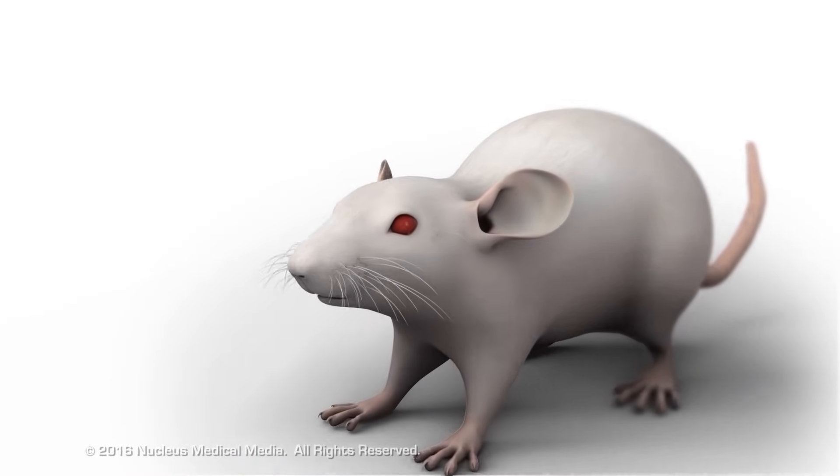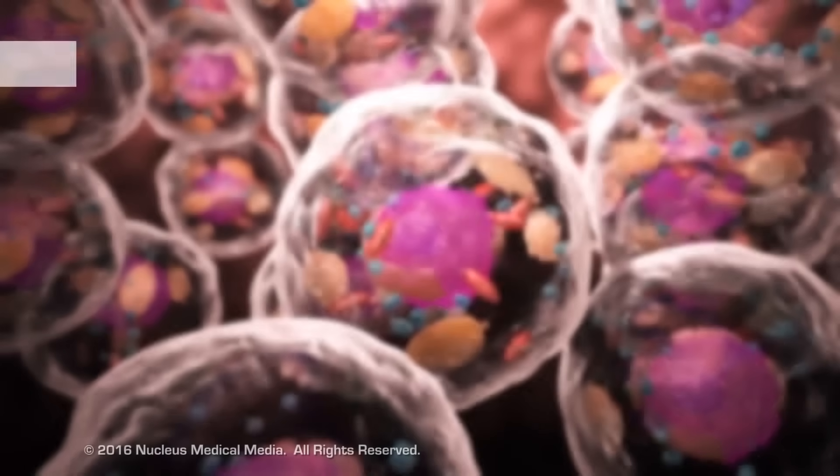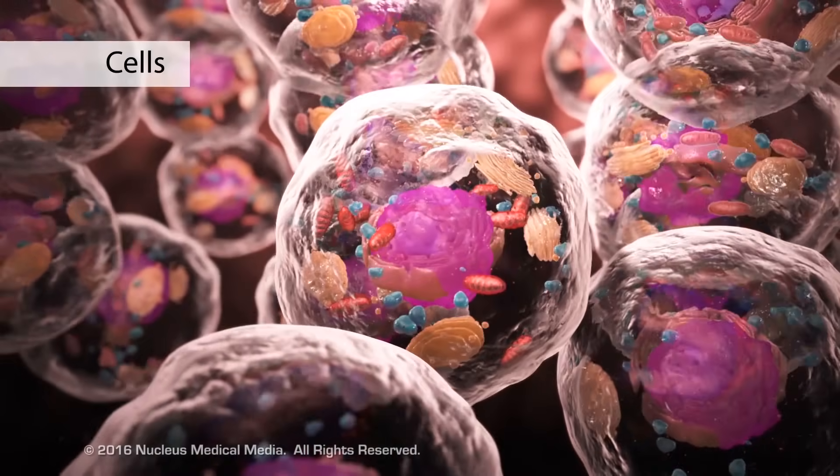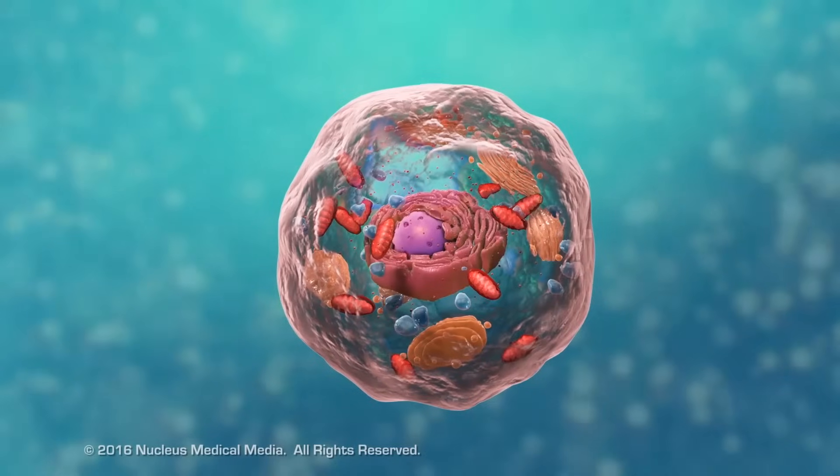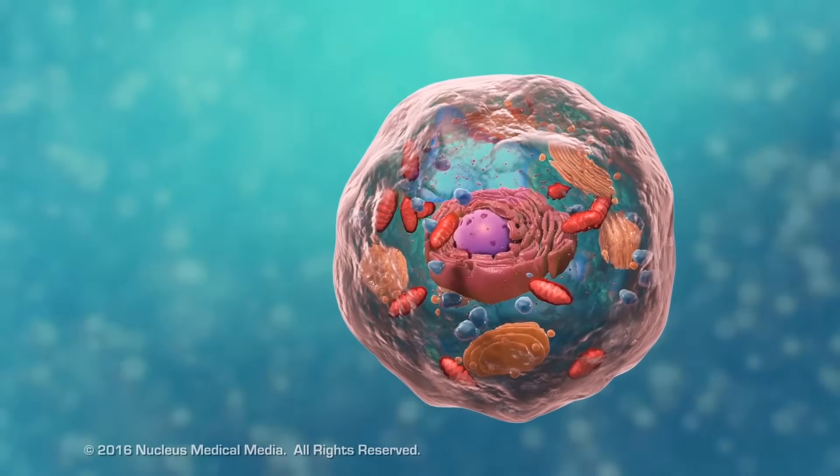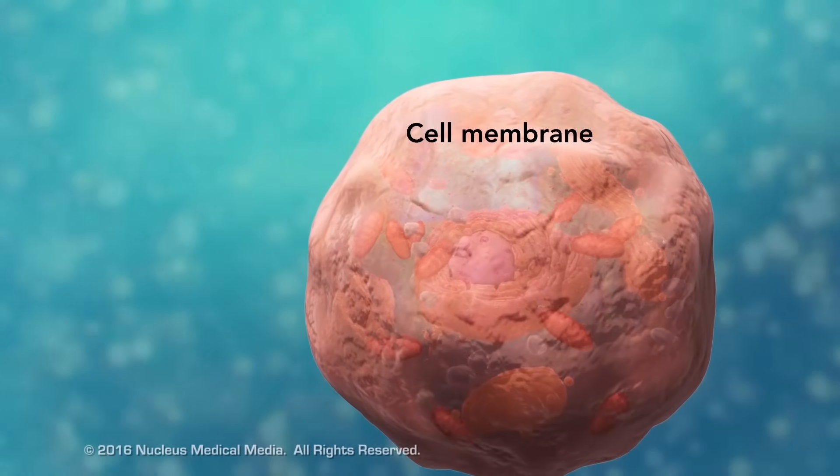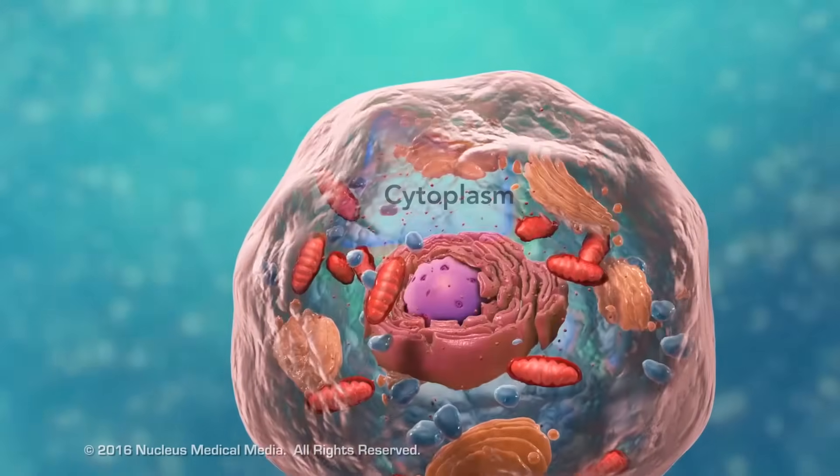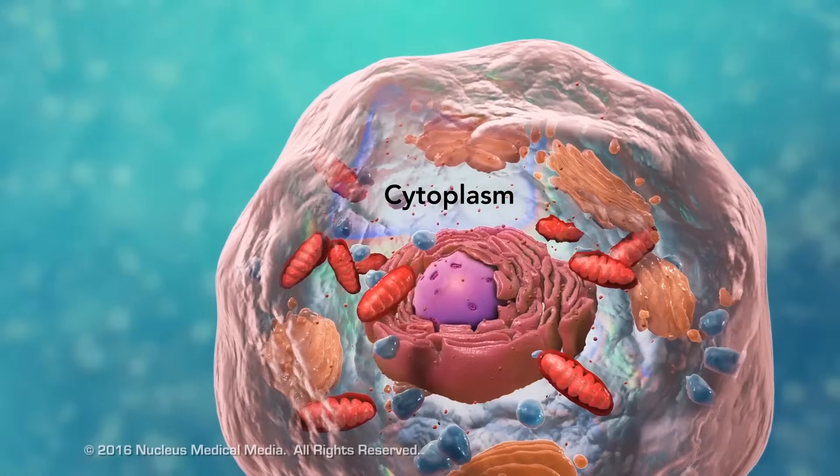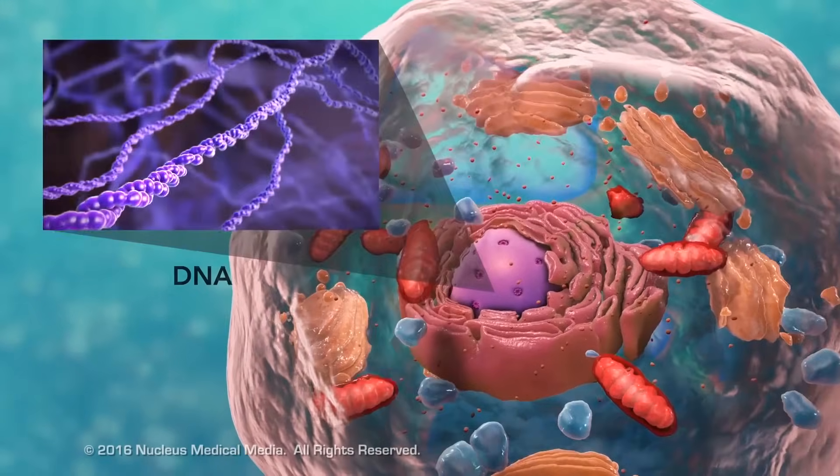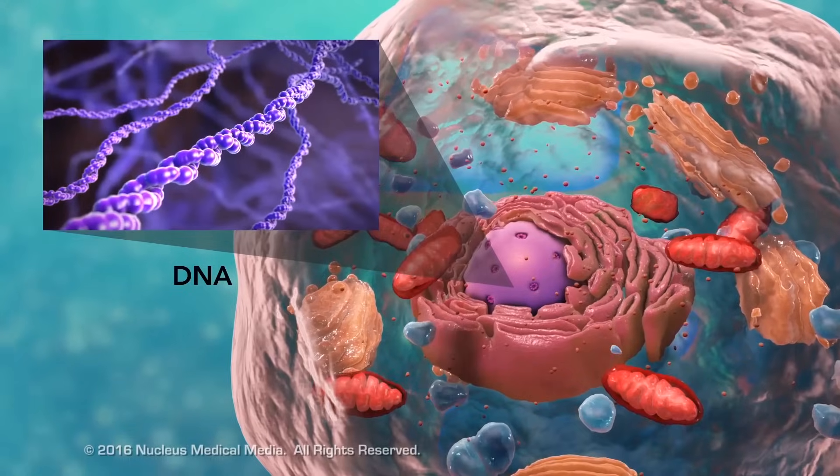Cells are the smallest living units of an organism. All cells have three things in common no matter what type of cell they are. All cells have a cell membrane which separates the inside of the cell from its environment, cytoplasm which is a jelly-like fluid, and DNA which is the cell's genetic material.